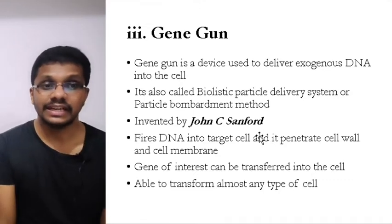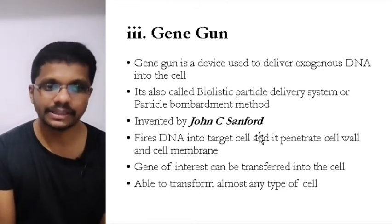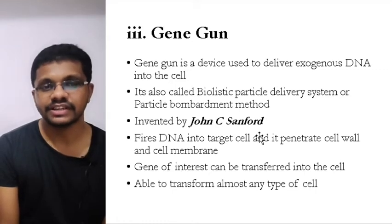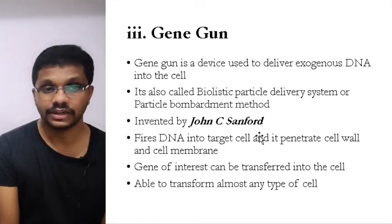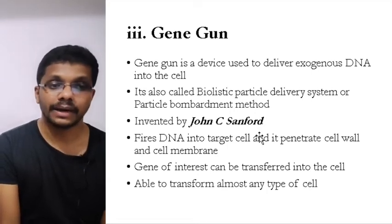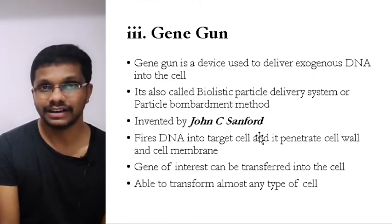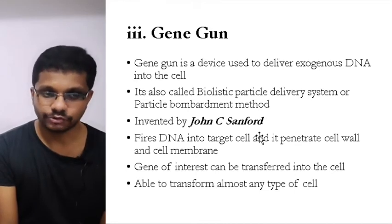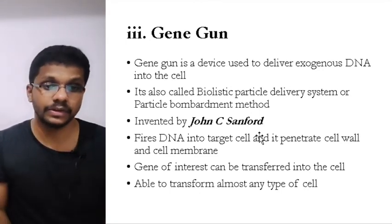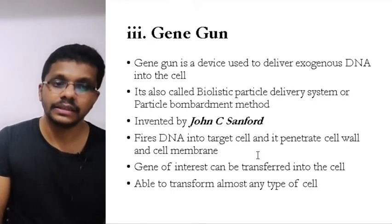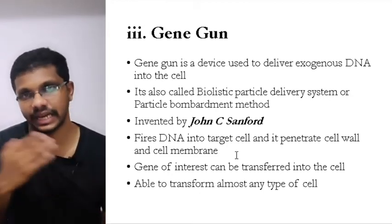The final method of gene transfer in bacteria is the gene gun. The gene gun literally fires DNA into a cell — it's a physical method of gene transfer. The gene gun is also known by two other names: the biolistic particle delivery system and the particle bombardment method. It was invented by John C. Sanford. It can be used for bacteria, animal cells, or plant cells, though the harshness and methodology will differ depending on the organism.